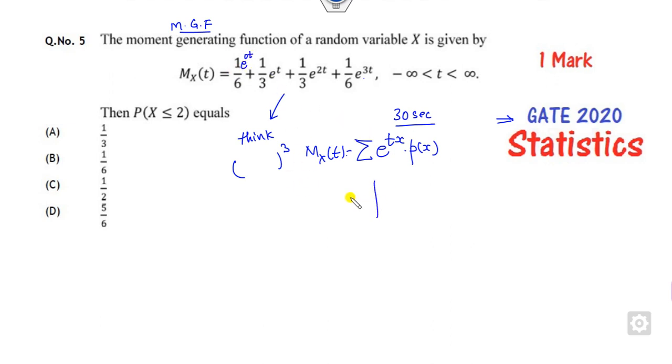If you compare them, what is the value of x? If x is 0, the coefficient is 1/6. If x is 1, coefficient is 1/3. If x is 2, it is 1/3. If it is 3, then it is 1/6.